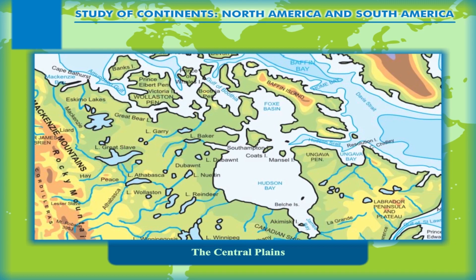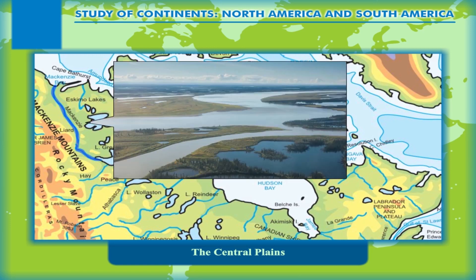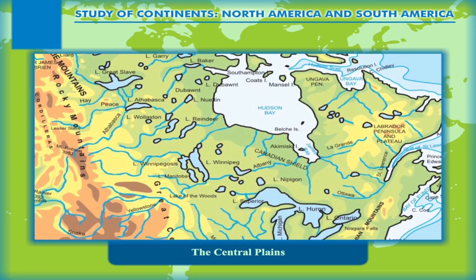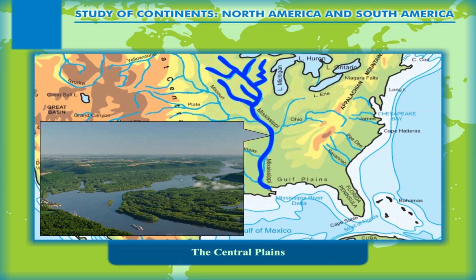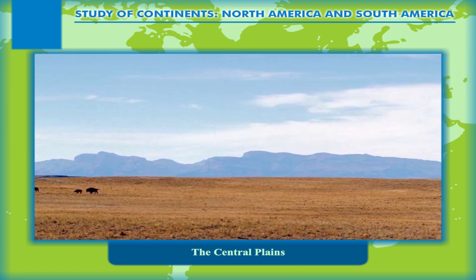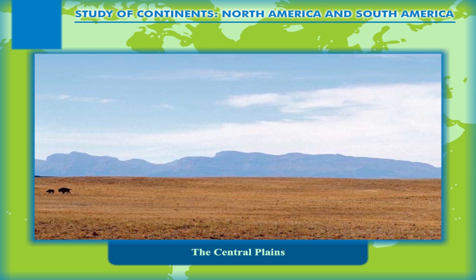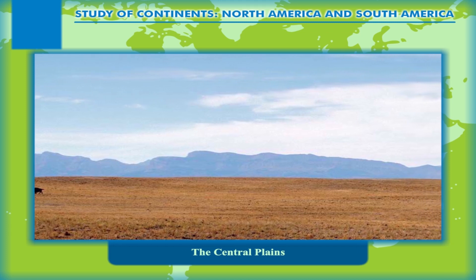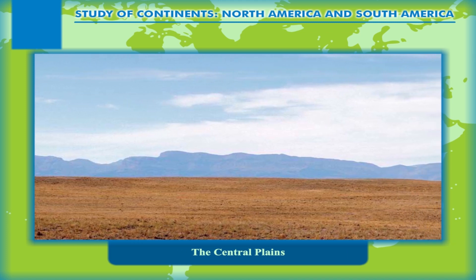The northernmost portions of these plains are drained by the Mackenzie River, which flows northwards and joins the Arctic Ocean. The south-flowing Mississippi River and its tributaries flow into the Gulf of Mexico and form the southern portion of the plains. The area of these plains along the Rockies is quite high, and there they are known as the High Plains.